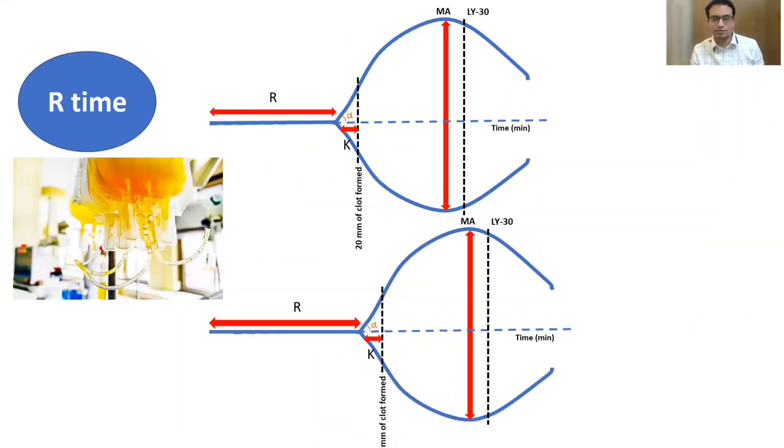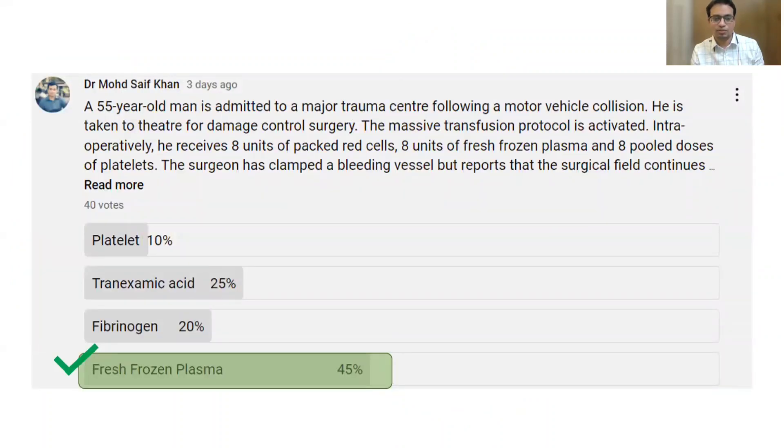As I said, R time normally is up to 10 minutes. If it is more than 10 minutes, that means there is either quantitative or qualitative deficiency in the clotting factors in plasma, and therefore the treatment of choice is always fresh frozen plasma when there is increase in R time. The answer to this question on my YouTube community post was fresh frozen plasma after this question because R time was prolonged, I think it was 12 minutes.